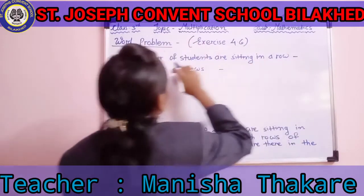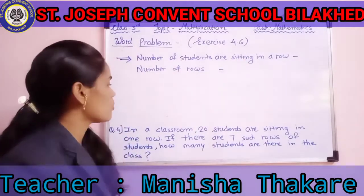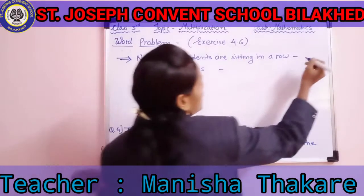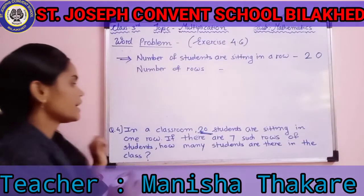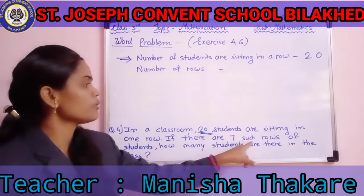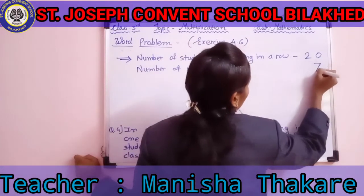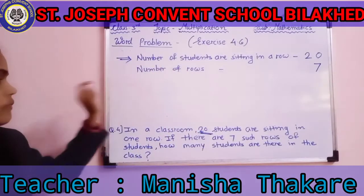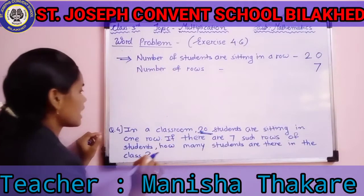The total number of students sitting in one row is 20, so we write 20. The number of rows is 7, so we write 7. Now we find out how many students are there in the class — the total number of students.